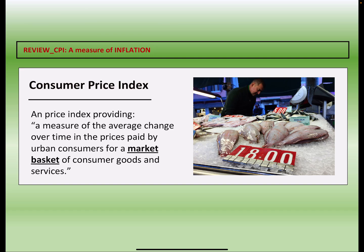The CPI — we talked through it in Chapter 6 — is the price index we use most often here in the United States to gauge what our inflation is for the year. We take a market basket of goods and services, and over time we track changes in the price. As the Consumer Price Index changes — goes up or down — that shows, for the most part, what's happening in terms of inflation in our economy.